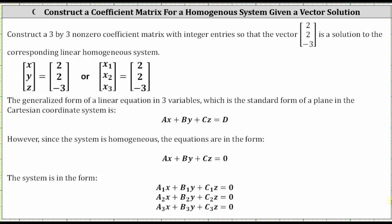We want to construct a three by three nonzero coefficient matrix with integer entries so that the vector with components two, two, and negative three is a solution to the corresponding linear homogeneous system. Because we are constructing a three by three nonzero coefficient matrix, we know we have a system of three equations with three unknowns.